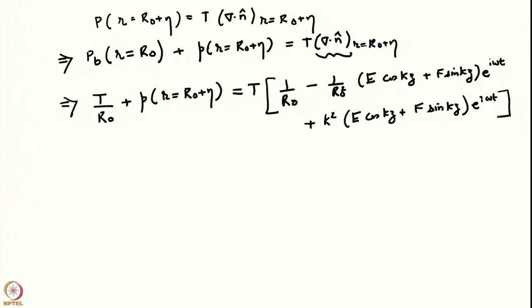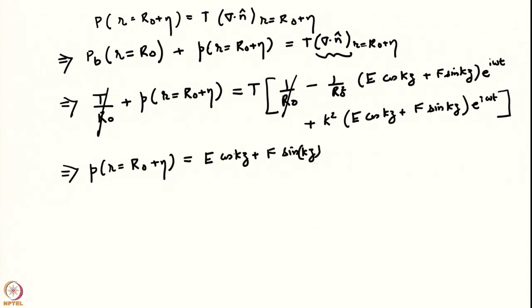There is a complex conjugate which has to be added, which I am not writing explicitly. You can see that the first term on each side cancels — that is just subtracting out the base state from our equation, so that we are left with an equation for the perturbation. The perturbation pressure is just the expression: (E cos kz + F sin kz) times e^(iωt) times (k² − 1/r0²). This is my expression for the perturbation pressure.